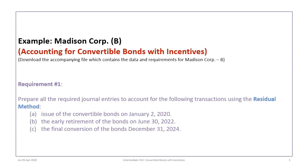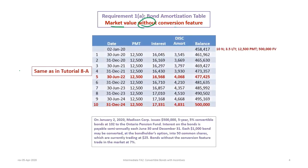This tutorial focuses on the Madison Corp B example. We'll proceed with requirement one, which is to prepare all the required journal entries using the residual method — the issue of the bonds on January 2nd, 2020, the early retirement on June 30th, 2022, and the final conversion on December 31st, 2024. For requirement 1A, we show a bond amortization table with the market value based on no conversion feature. No surprise that the result is the same as tutorial A, where we calculated the present value based on 10N, 3.5% interest, $12,500 payment, and $500,000 future value.